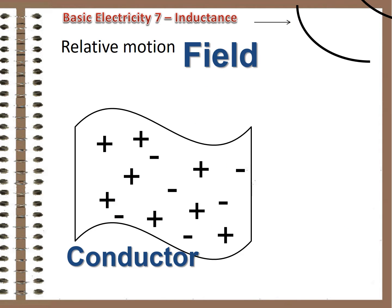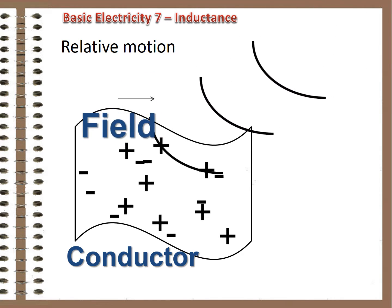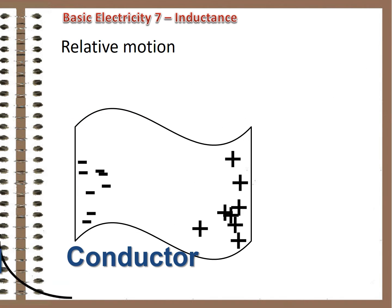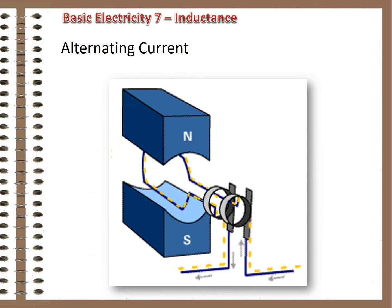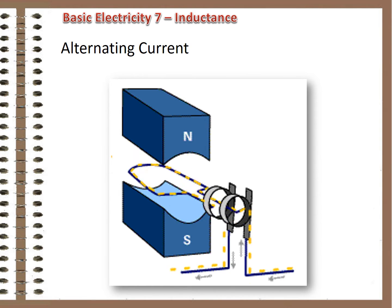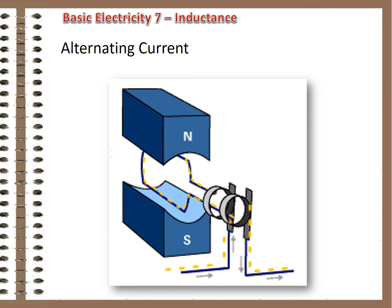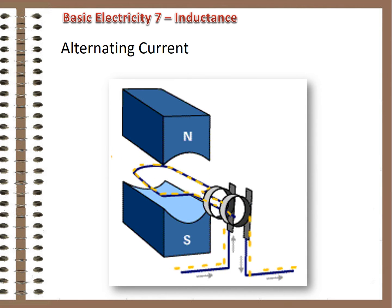When there is relative motion between a magnetic field and a conductor, charges in the conductor are separated, which creates potential difference — the potential and pressure for electrical energy to flow. We say that the magnetic field induces a charge in the conductor. In reality, we use a spinning motion to cause the relative movement, which results in the charges being pushed first one way, then the other. Alternating current, we call it. Most electrical energy in the world is generated this way.